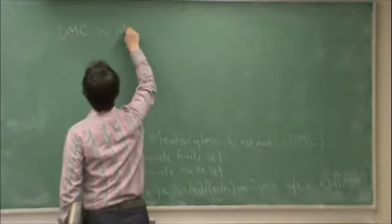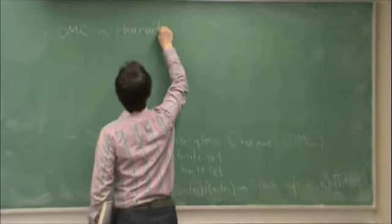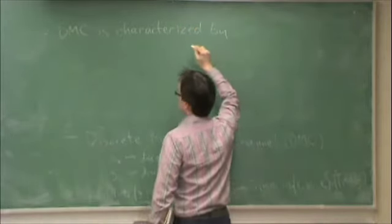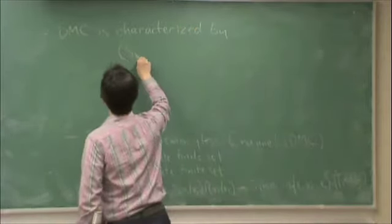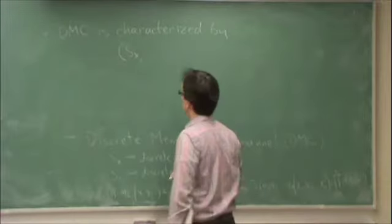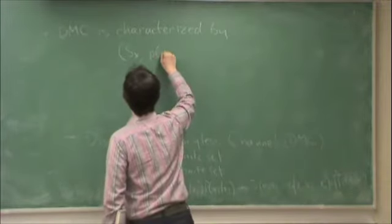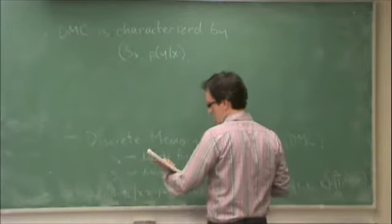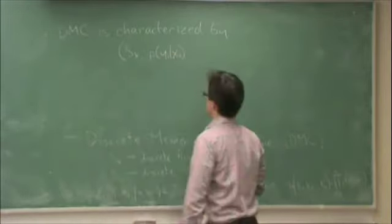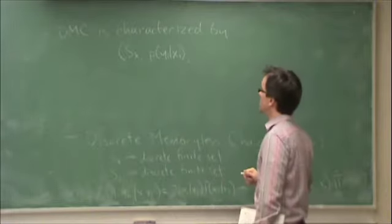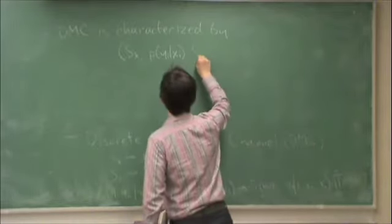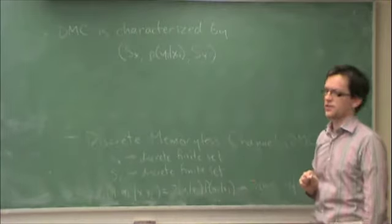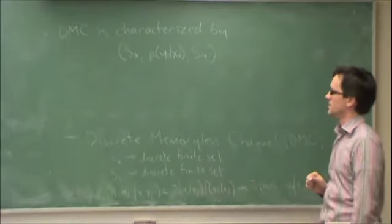is characterized by the triple Sx, in other words the input alphabet set, probability of yi given xi for any particular channel use at time i, and the output alphabet Sy. So once you know all of those things, that's a complete characterization of a discrete memoryless channel.